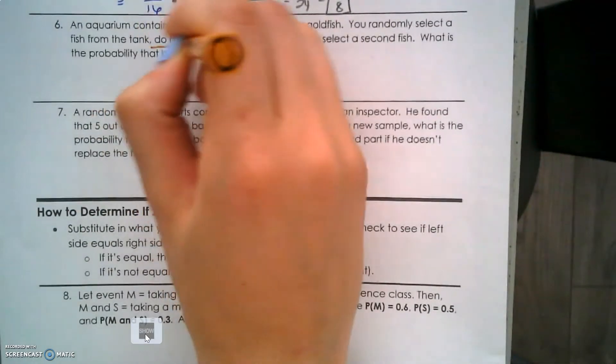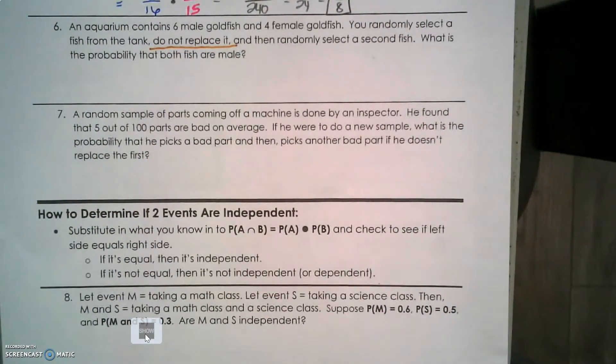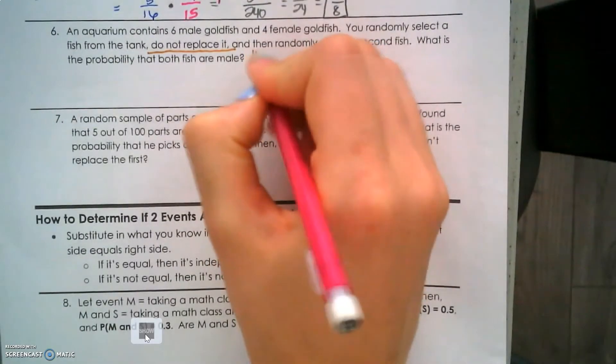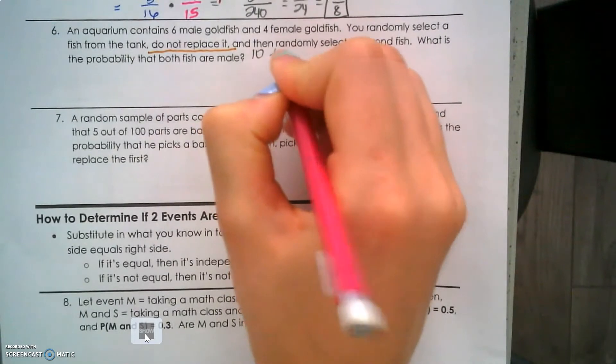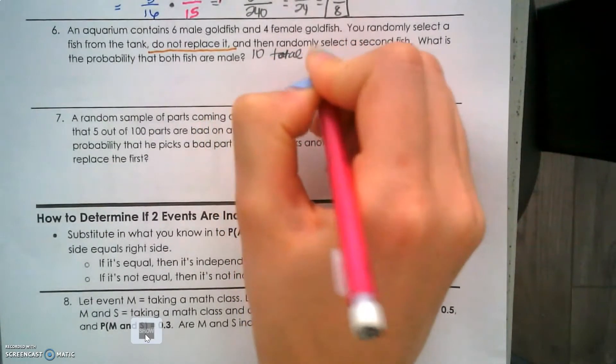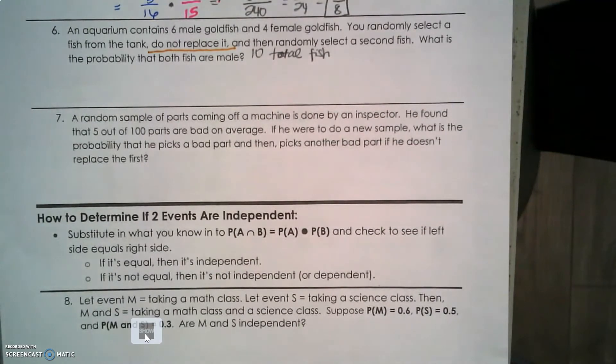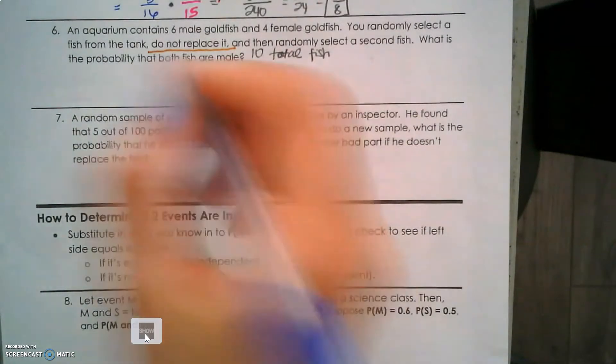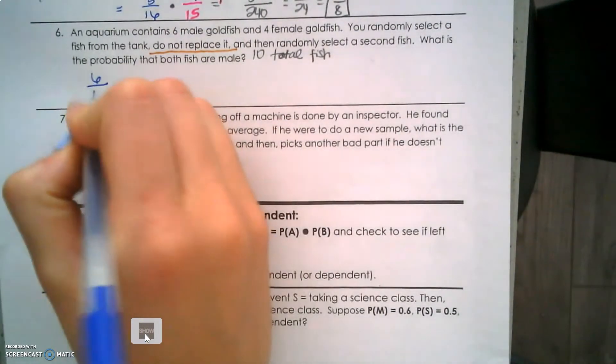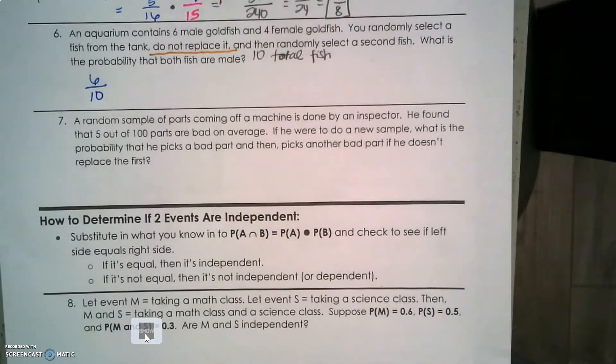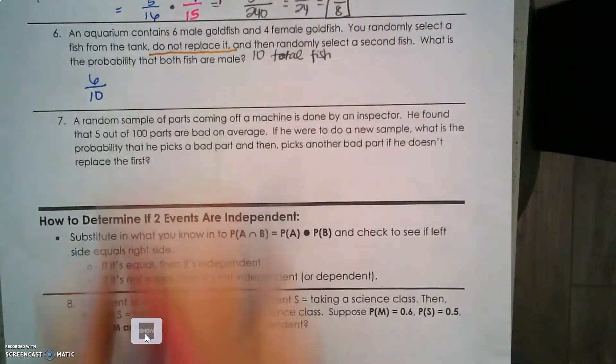Total number of fish is 6 + 4 = 10. The first time you select from the tank, you have a 6 out of 10 chance that it's male. Then you take that fish and put it in a different tank.